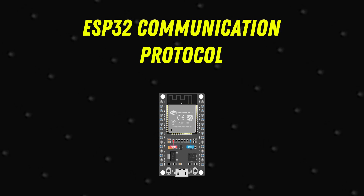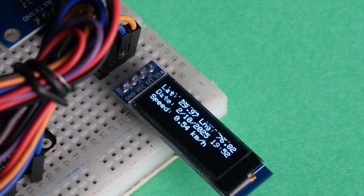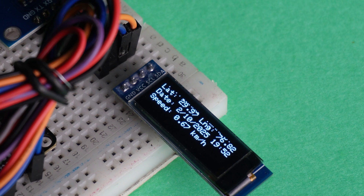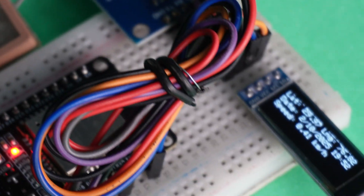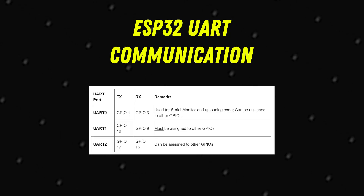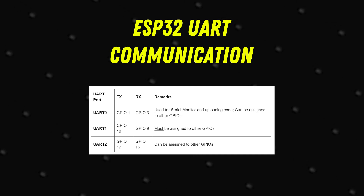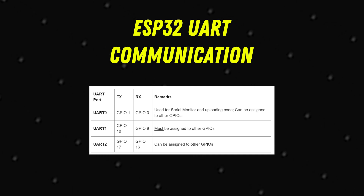The ESP32 can talk to other devices using communication protocols like I2C, UART, and SPI. UART pins are used for serial communication with devices like your computer or Bluetooth — we use UART pins to transmit and receive data. The ESP32 has three UART controllers: UART 0, UART 1, and UART 2. UART 0 is used for programming and debugging via the USB to UART bridge, using GPIO 1 and GPIO 3 as transmitter and receiver respectively.